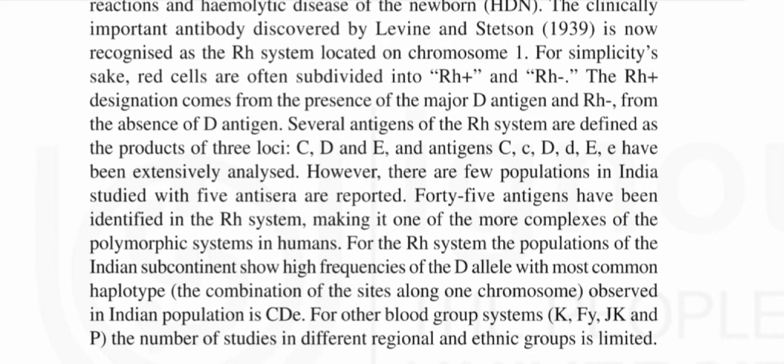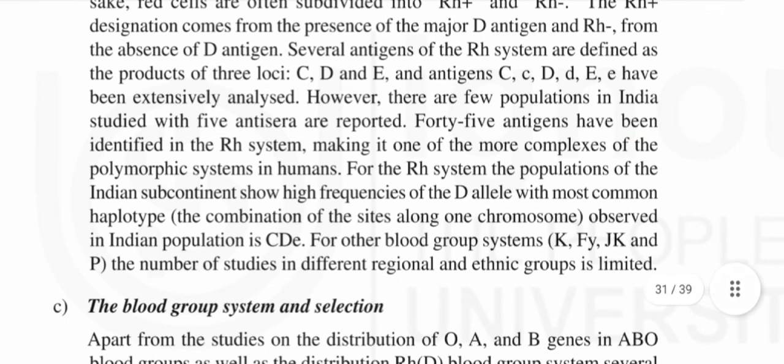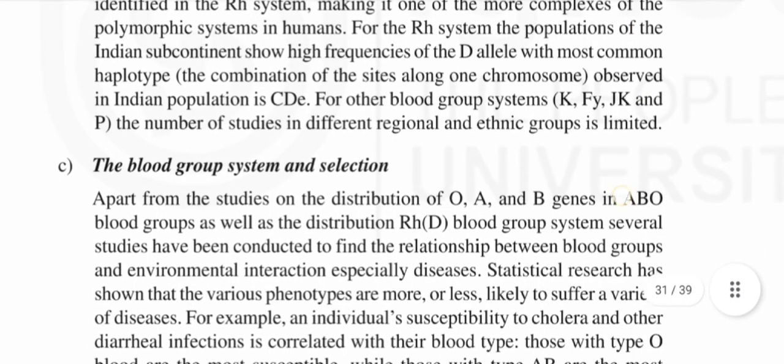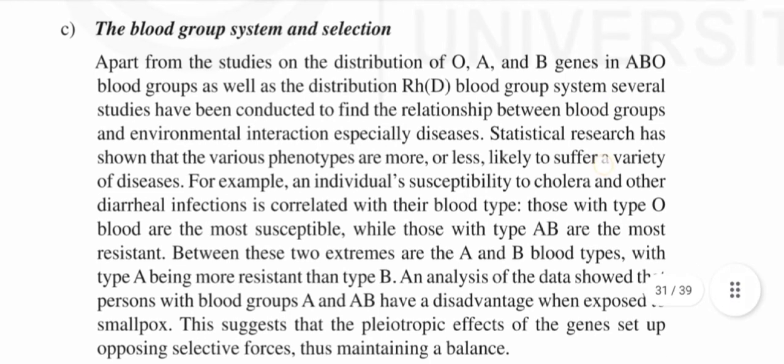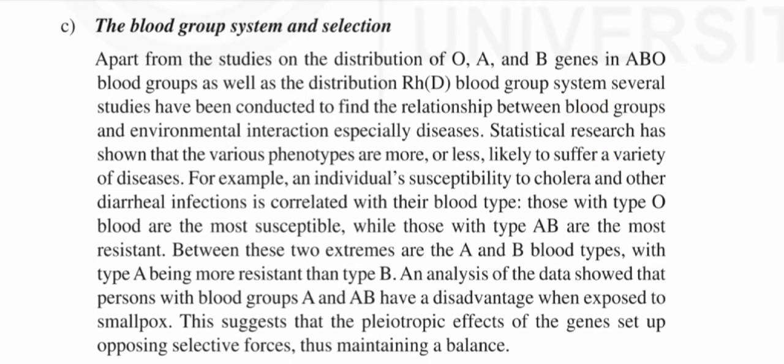For other blood group systems — K, F, Y, J, K, and P — the number of studies in different regional and ethnic groups is limited. The blood group system and selection: apart from studies on the distribution of O, A, and B genes in ABO blood groups, as well as the distribution of the RHD blood group system, several studies have been conducted to find the relationship between blood groups and environmental interaction, especially diseases. Statistical research has shown that various phenotypes are more or less likely to suffer from a variety of diseases.